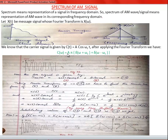C(ω) is equal to A·π·[δ(ω + ω_c) + δ(ω − ω_c)]. Graphically, this is the time domain representation of the carrier signal C(t). When applying the Fourier transform, we have the frequency domain version with two peaks: δ(ω − ω_c) and δ(ω + ω_c), each with maximum value A·π.